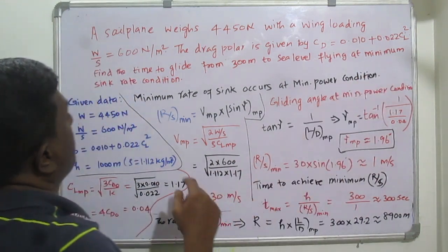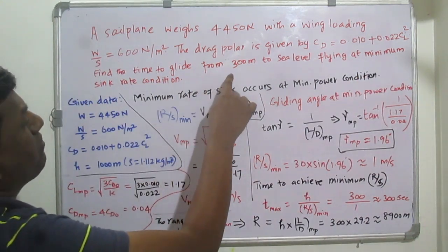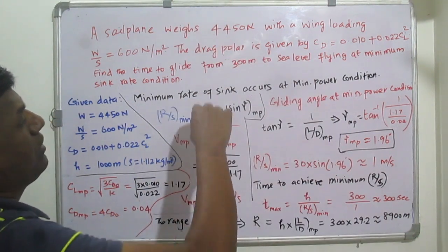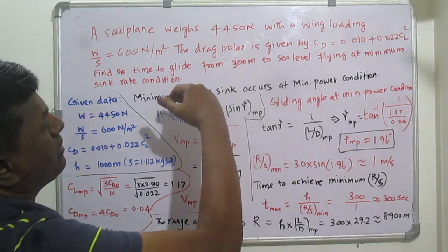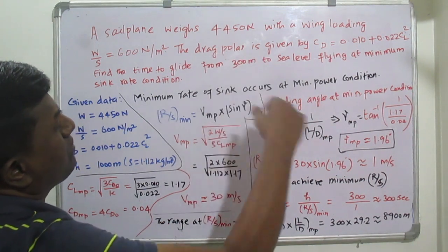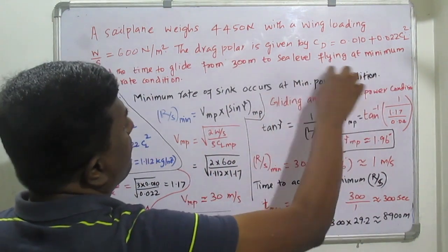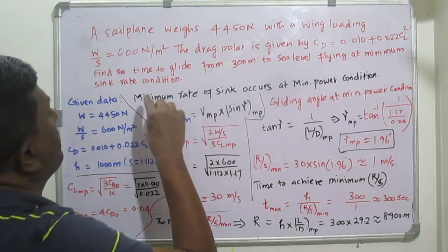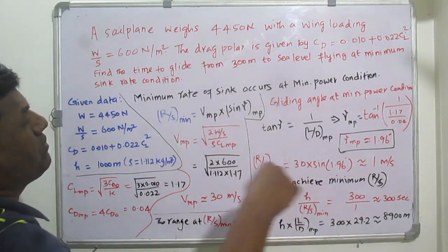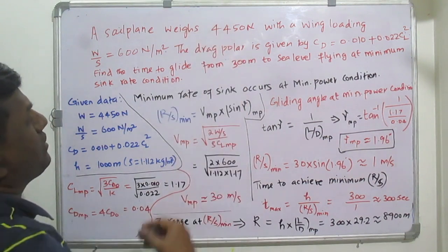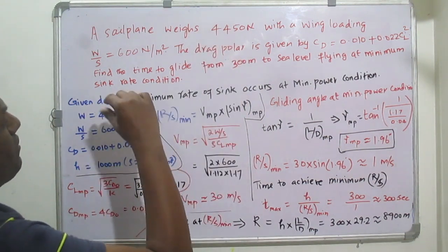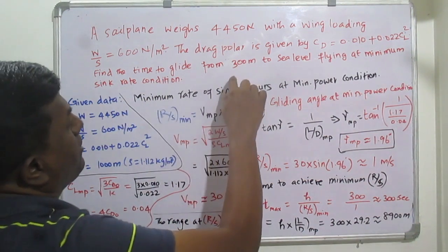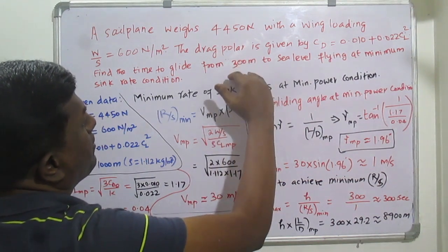The drag polar equation is given as: CD = 0.010 + 0.022·CL². We need to find the time to glide from 300 meters down to sea level, at the condition of minimum rate of sink.